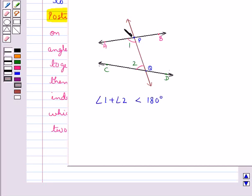If the sum is less than 180 degrees on the left side of PQ, then the lines AB and CD will intersect on the left side of PQ. This is Euclid's fifth postulate.